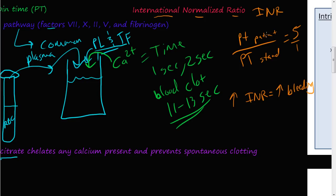If the patient's INR is five, the extrinsic pathway will take a long time to stop a cut from bleeding. On the other hand, if you have a very low INR, say 0.05, then this pathway is very quick — the chance of bleeding out is very low. A low INR means decreased bleeding.